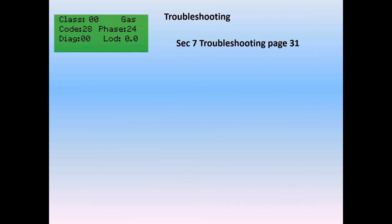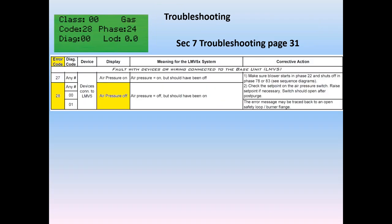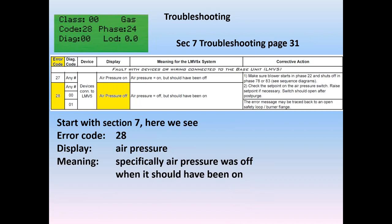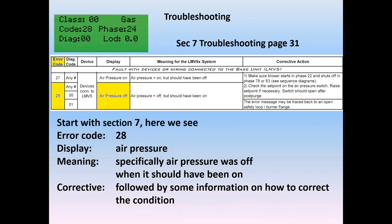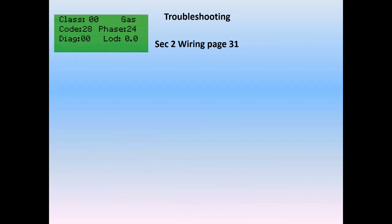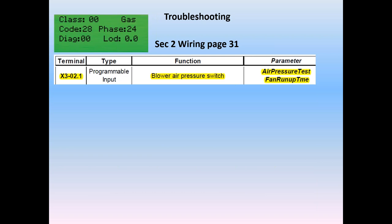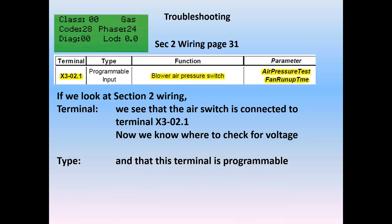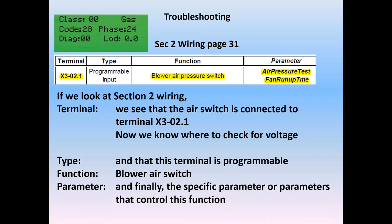Let's go into some troubleshooting. We'll take that exact fault — we'll start with section 7, troubleshooting. First thing we do is look up the code; in this case, code 28. The next column tells us that this is an air pressure fault, meaning specifically that the air pressure was off when it should have been on. Then we get a corrective action followed by some information on how to correct the condition. Now we can proceed to section 2 on the wiring. At page 31, we see that the air pressure is controlled by terminal X302.1. Now we know exactly where to meter to check for voltage to see if the air pressure switch is making or not. We also know that the terminal is programmable; the function will be air pressure switch.